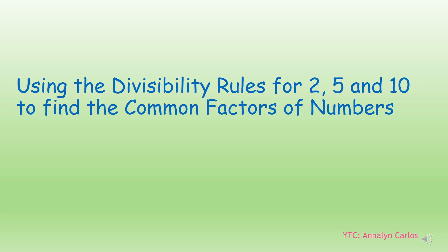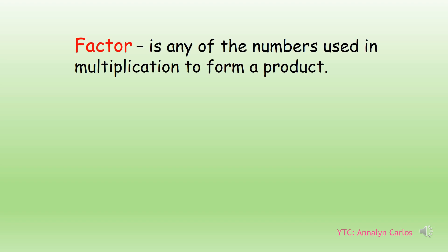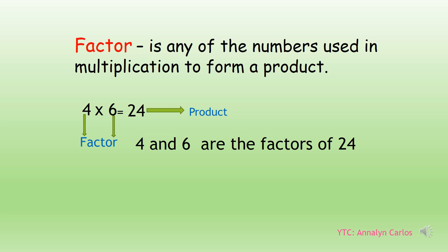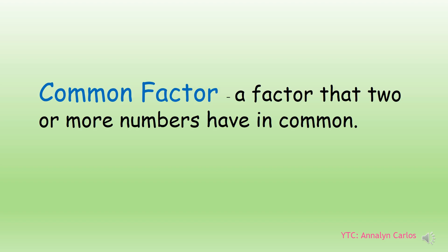For the second part of our lesson, let us apply the use of the divisibility rules of 2, 5, and 10 to find the common factors of numbers. Let us first identify what a factor is: it is any of the numbers used in multiplication to form a product — the numbers that we multiply to get an answer. Example: 4 times 6 equals 24; 24 is the product, and 4 and 6 are the factors. We also have common factor: a factor that two or more numbers have in common, meaning the same factors shared by two or more numbers.